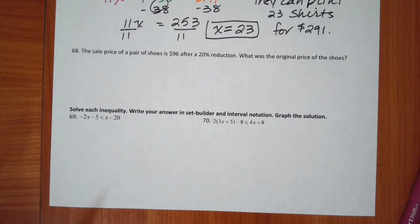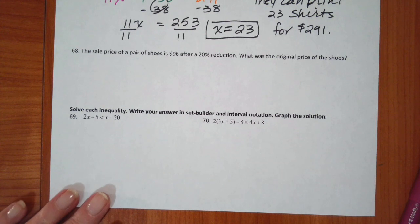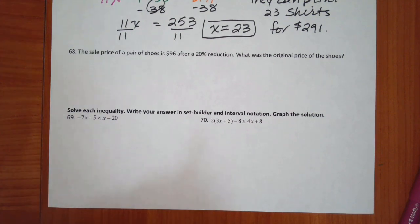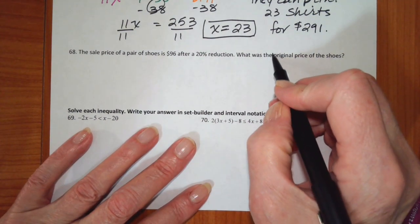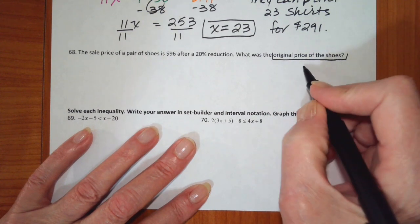Okay, the sale price of a pair of shoes is $96 after a 20% reduction. What was the original price of the shoes? So the original price of the shoe this is going to be our variable.